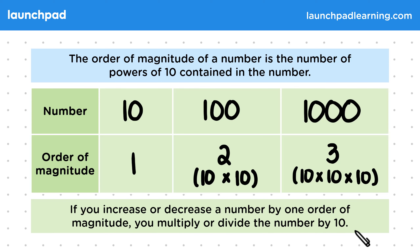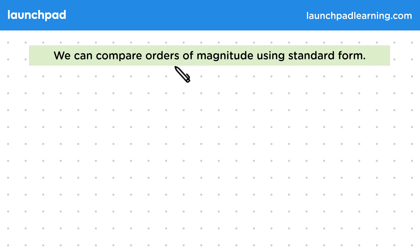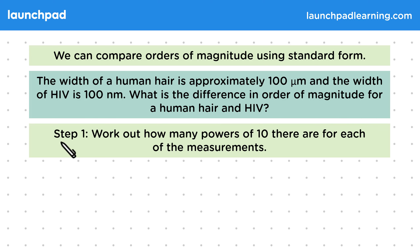So how do we make order of magnitude calculations when using standard form? We can compare orders of magnitude using standard form. The width of a human hair is approximately 100 micrometres and the width of HIV is 100 nanometres. What is the difference in order of magnitude for a human hair and HIV? Step one: work out how many powers of 10 there are for each of the measurements.